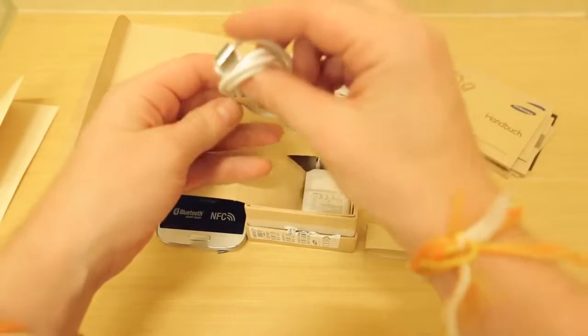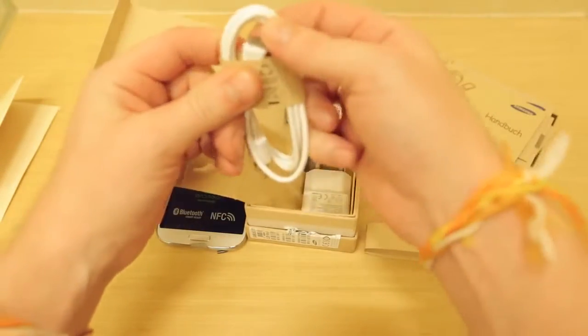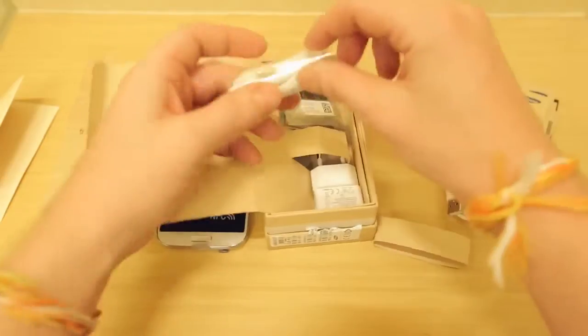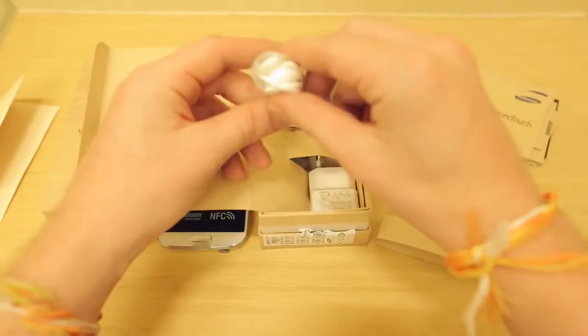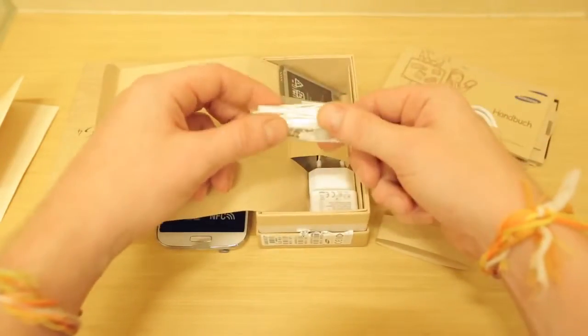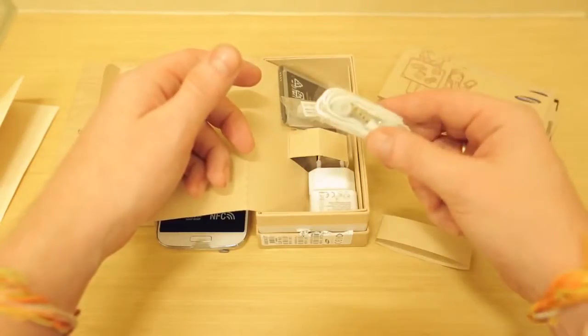Obviously a micro USB cable, typical Samsung white plastic. And here we have the headphones. Now we're going to take closer attention to these because headphones are actually a really important part of the device. So we'll be taking a closer look at these in just a moment.